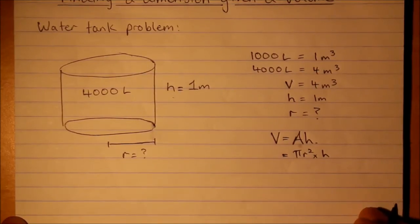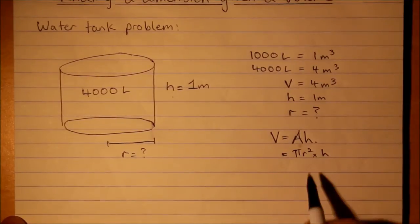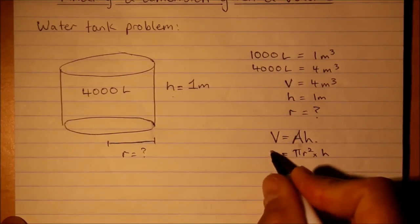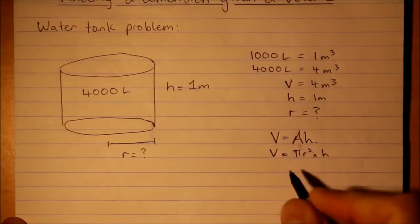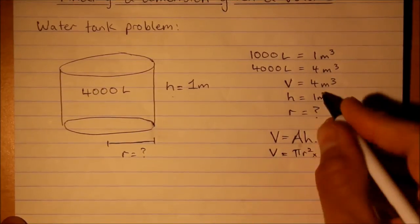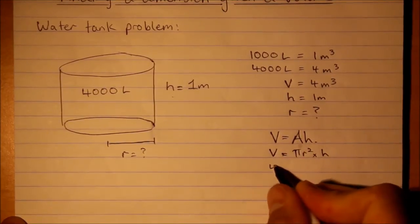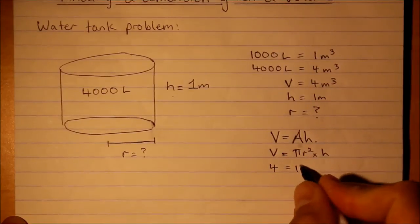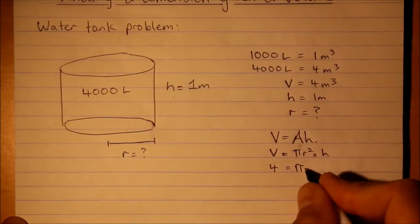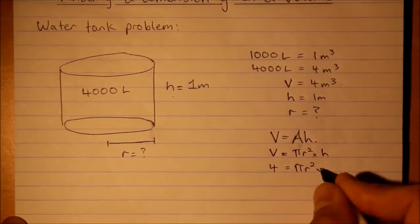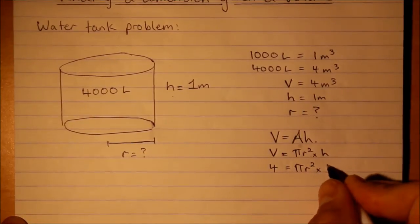Okay, so now what we can do is go ahead and substitute what we know into this formula. Okay, so volume is 4, we don't know r so we're just going to leave that, and height is 1.